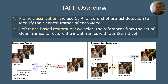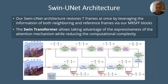Our approach involves two steps. In the first step, we perform frame classification, using CLIP for zero-shot artifact detection to identify the set of the cleanest frames of each video. Then, we carry out the reference-based restoration. To this end, we select the references from the set of clean frames and use them to restore the input frames through our SwinU-Net.